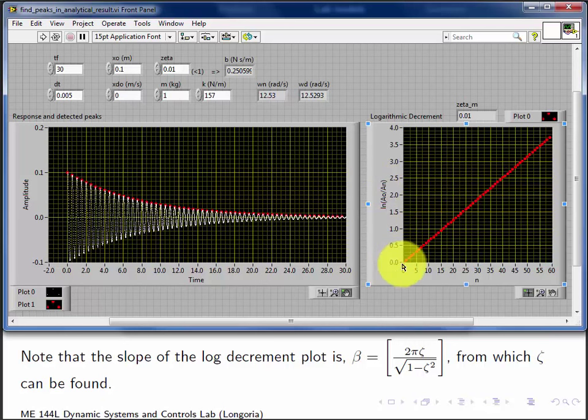And then what it does is it does a linear regression on that, finds that slope, solves the quadratic, and pumps out ζ. So over here I put in a ζ of 0.01, and my log decrement VI is giving me 0.01.